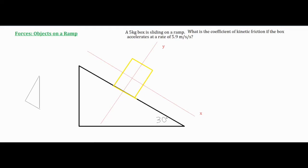In this video we're going to be talking about an object on a ramp. There's a 5 kilogram box that's sliding down a ramp and it says what is the coefficient of kinetic friction if the box accelerates at a rate of 5.9 meters per second per second.